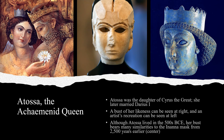Here are some images of Atosa, the famous Achaemenid queen. Atosa was the daughter of Cyrus the Great and later married Darius I. The bust of her likeness can be seen at the right-hand side of this slide, and an artist's recreation of what she may have looked like based on the bust can be seen at left. Although she lived in the 500s BCE, Atosa's bust bears many similarities to the Inanna mask from over 2,500 years earlier.